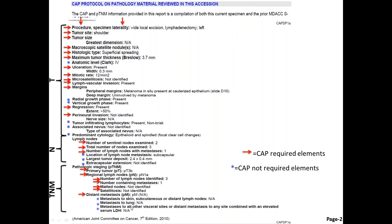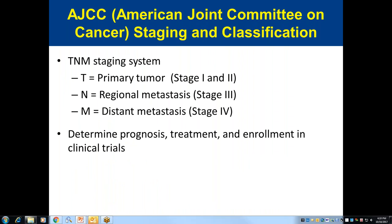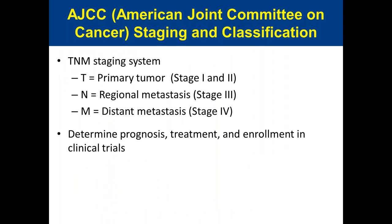The American Joint Committee on Cancer makes a staging and classification system — the TNM staging system. T means primary or localized tumor: stages 1 and 2. N means regional metastasis to the regional lymph node: stage 3. M means distant metastasis or stage 4 disease. These TNM staging systems determine prognosis, treatment, and enrollment in clinical trials for patients with melanoma.